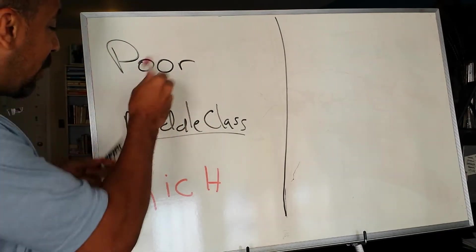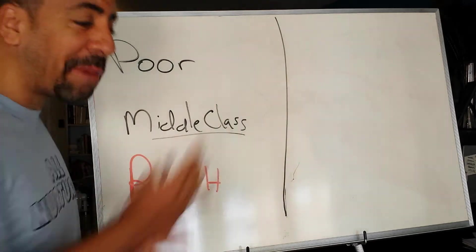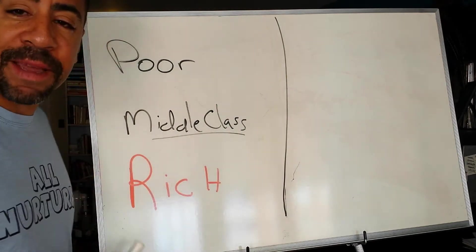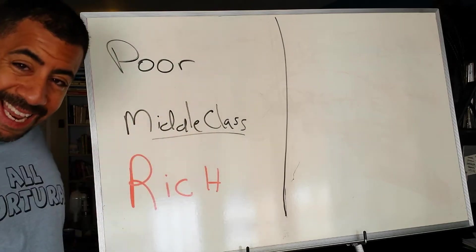There are three kinds of people in the world: the poor, the middle class, and the rich. Most people think it has something to do with how much money they make and how they keep it. However, the truth is that it's what they do with it once they get it.